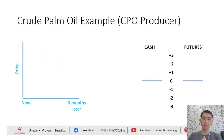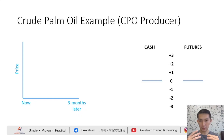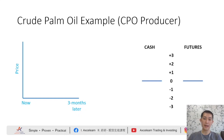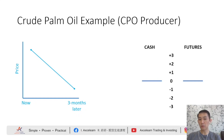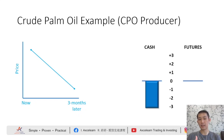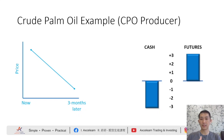Now, let's look at an example of a crude palm oil (CPO) producer. Let's say the producer is concerned about the price of his CPO production when he sells it three months later. If the price drops at the time of production, the producer will have to sell the CPO at a lower price. One way the producer could hedge his exposure would be to sell a CPO futures contract. So, when production comes around and the price of CPO drops, he will see a loss when he sells his CPO in the local physical cash market. However, that loss would be offset by a trading gain in the futures market because he shorted the futures market.